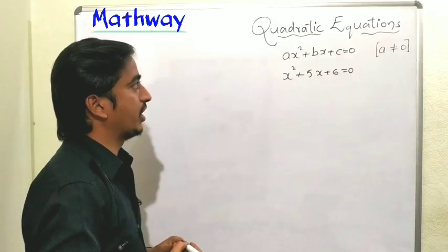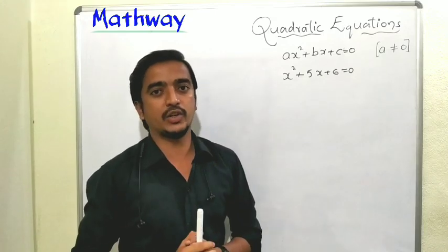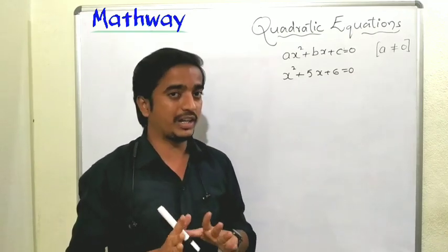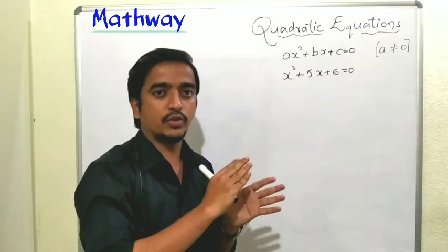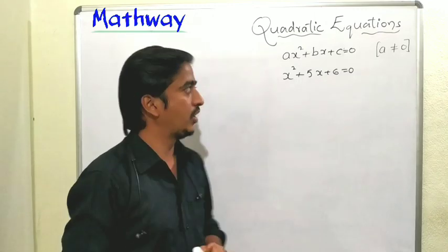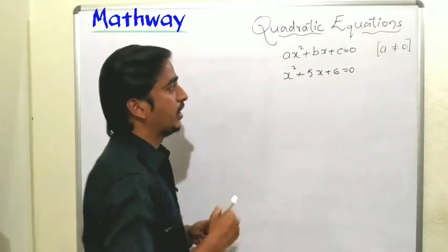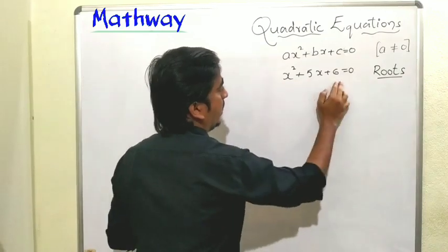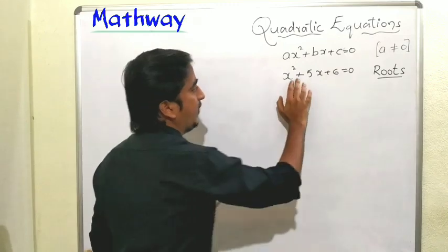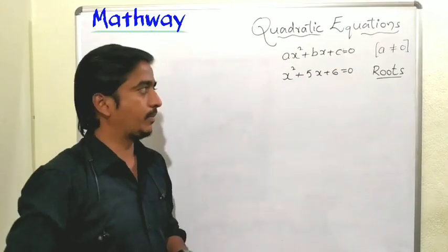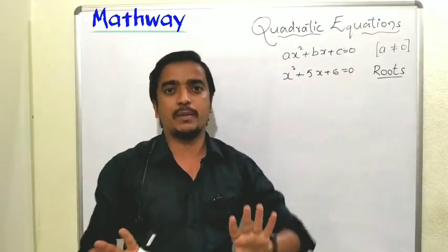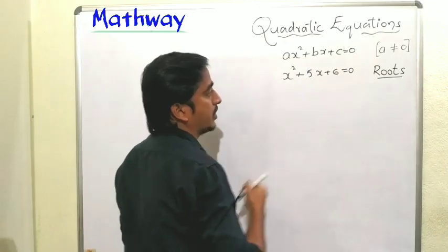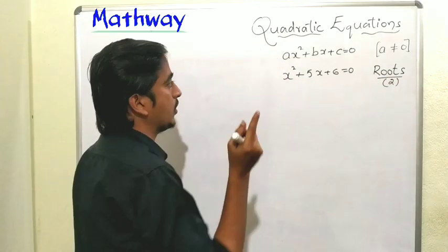Now, finding the solution by factorization. Factorization is the most commonly used method. We need to find the x values that satisfy the equation — those are called roots. The factorization method is one of the best methods for finding roots. Since it is a quadratic equation it has two roots, and we find them by factorization.